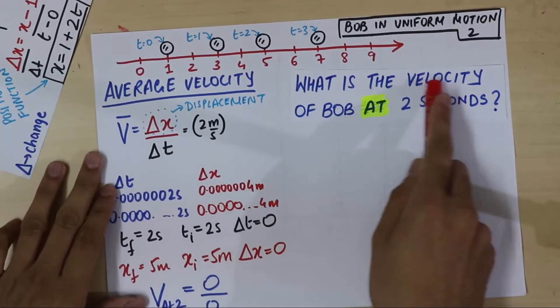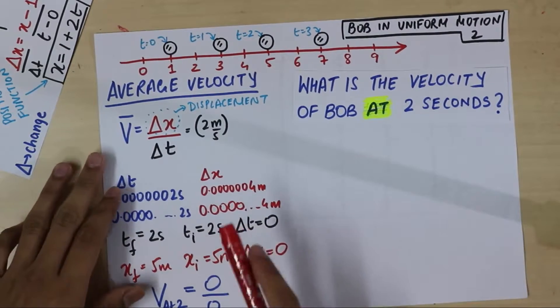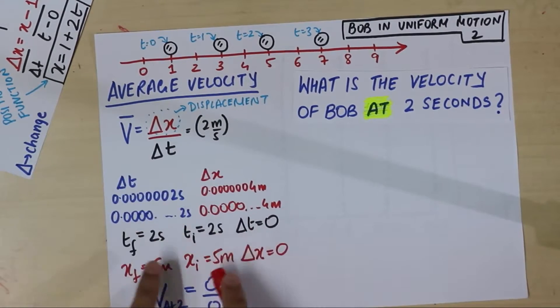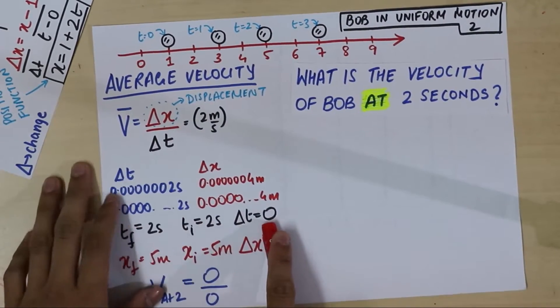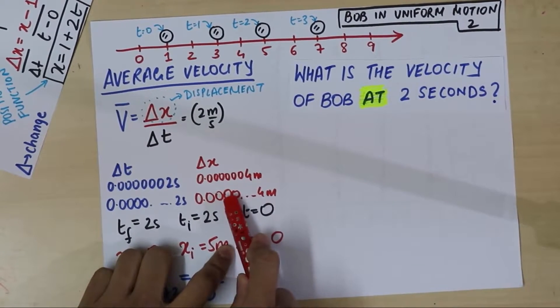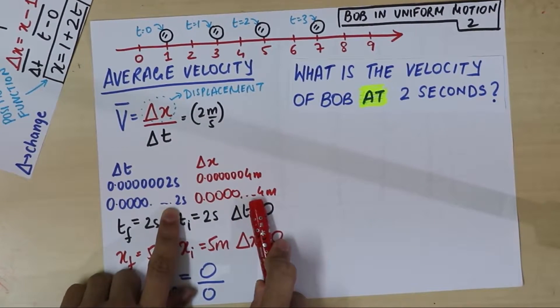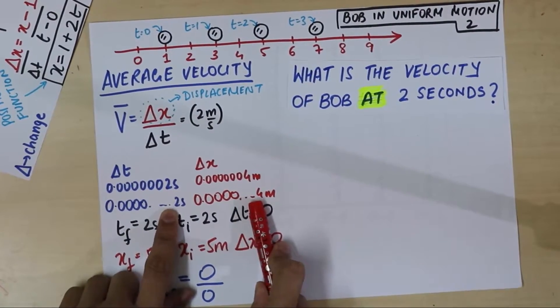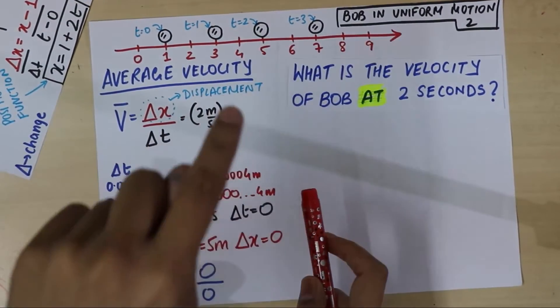So, now we can understand, what the velocity is going to be at 2 seconds. Even if delta t is approaching 0. You see, it's approaching 0. Delta x will also approach 0, as you can see. However, the ratio will always remain 2 meters per second.